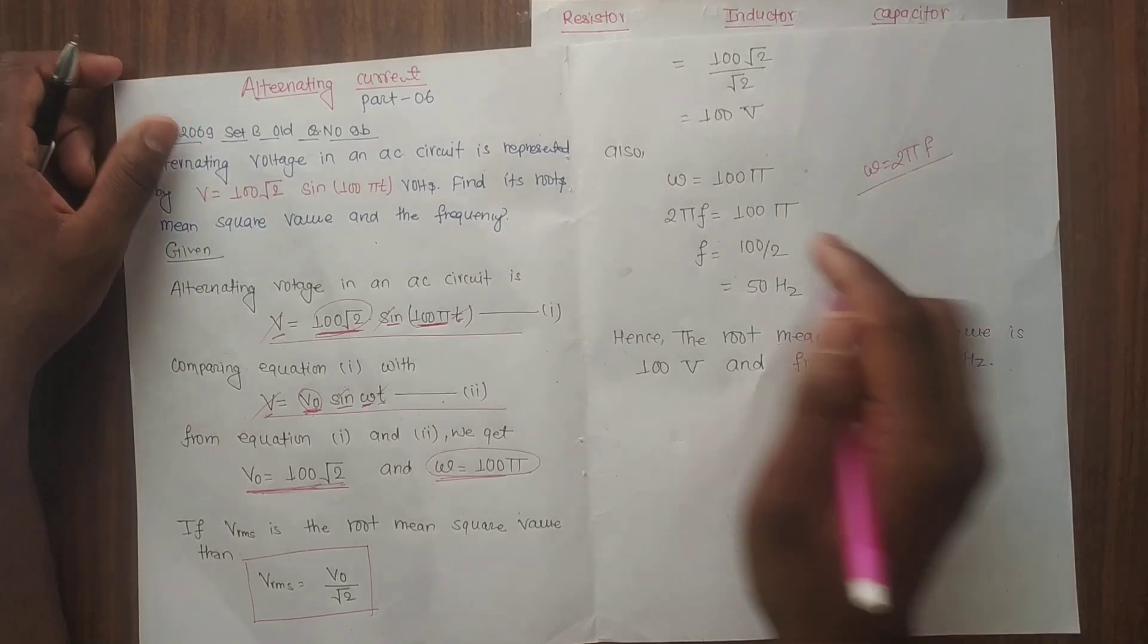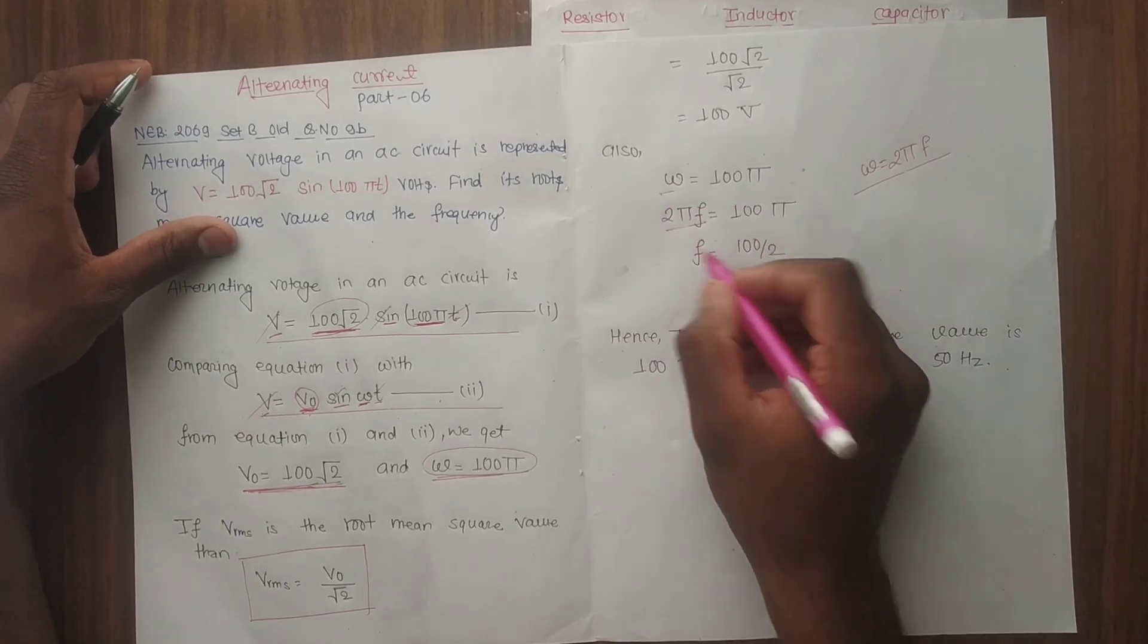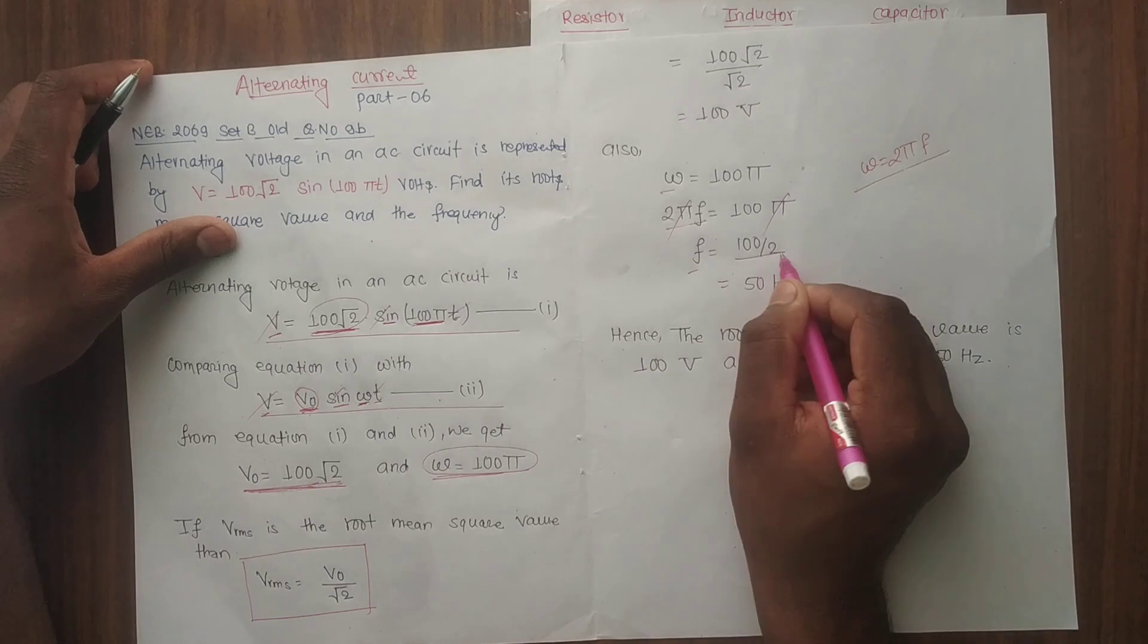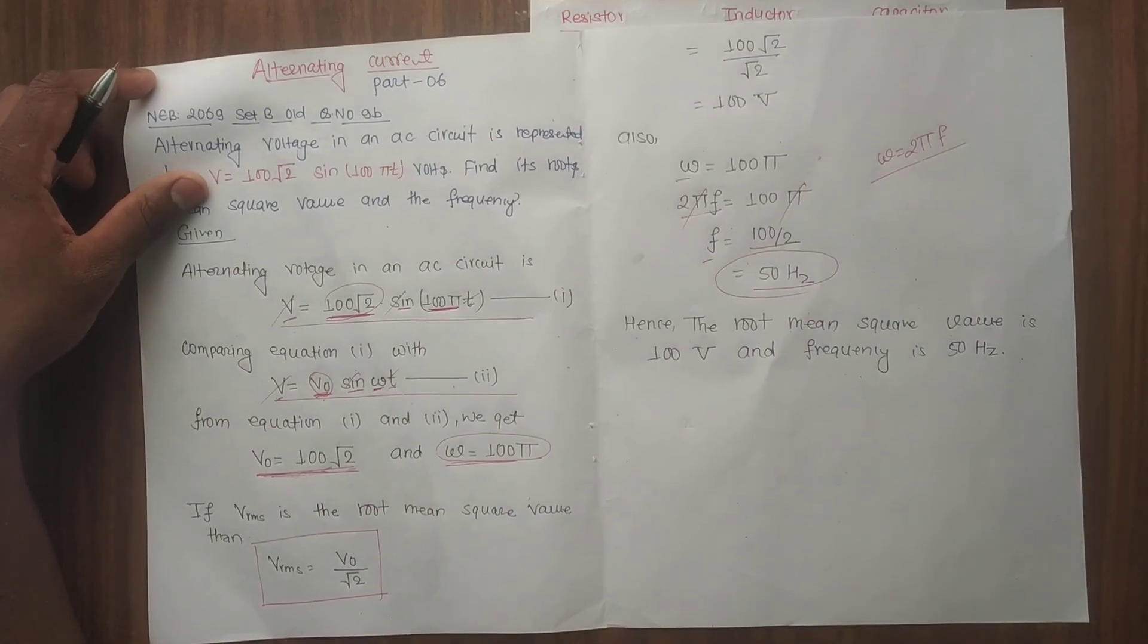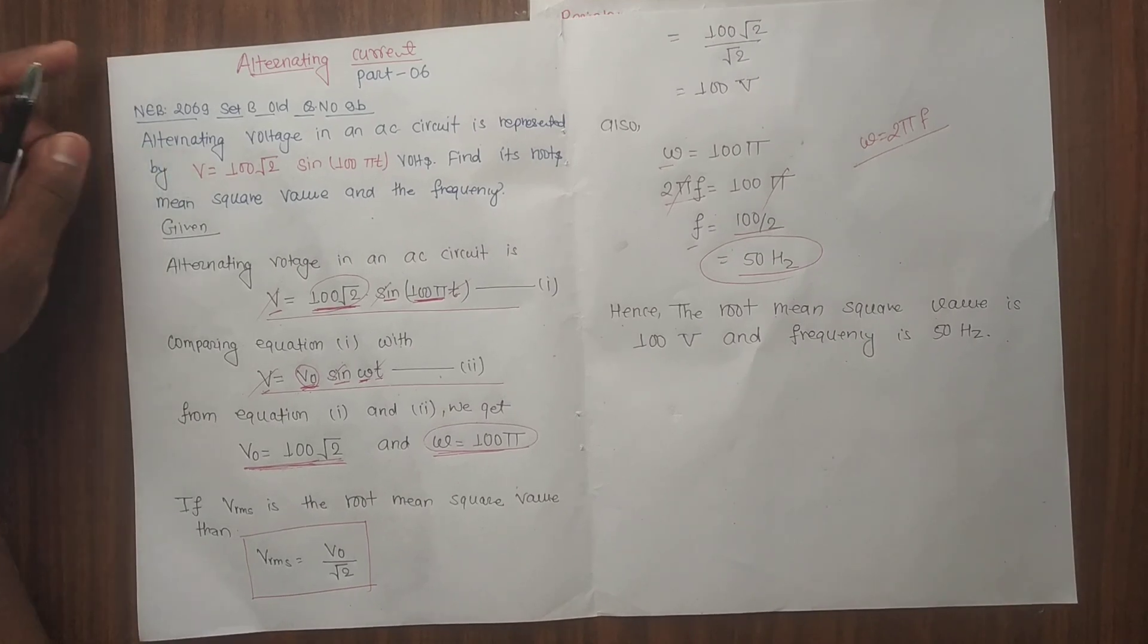The frequency ω = 2πf, so f = 100/(2π), which equals 50 hertz. Hence, the root-mean square value is 100V and the frequency is 50Hz.